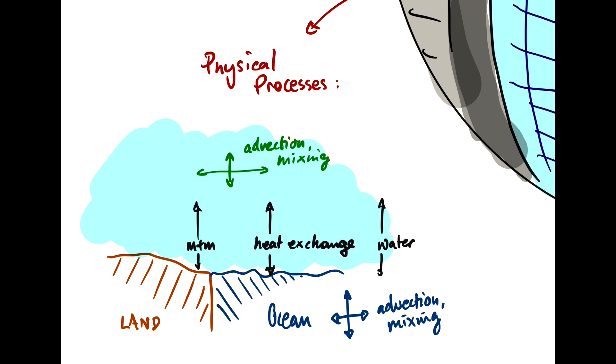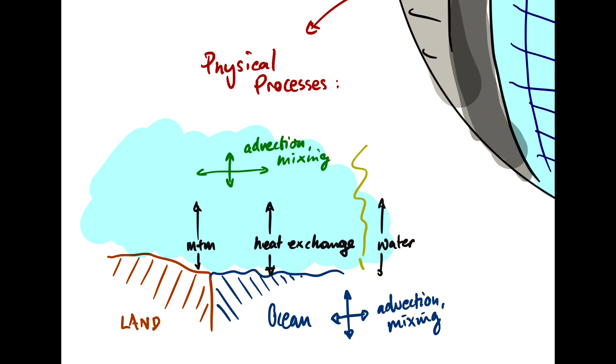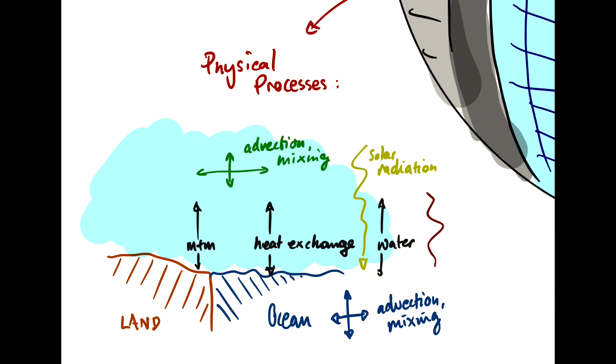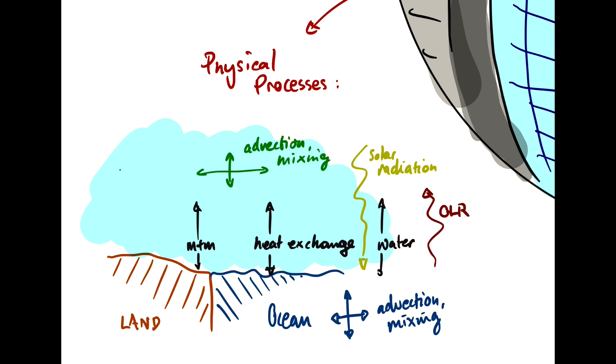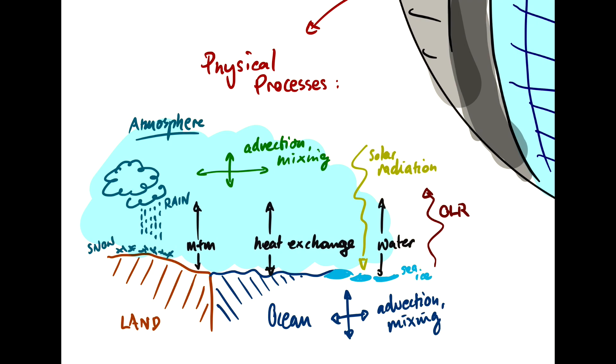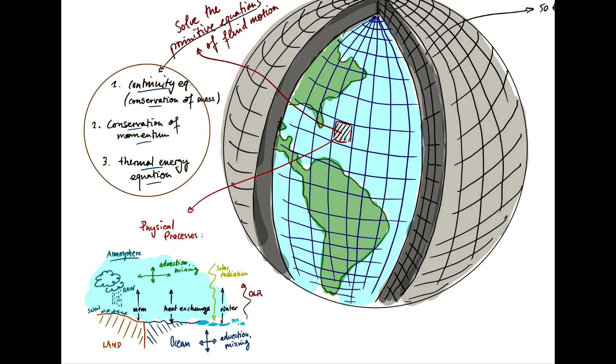You have what we were talking about previously. Solar radiation. And outgoing long-wave radiation. You have clouds. And snow. And rain. Sea ice. So, all of these processes are represented on your model grid.